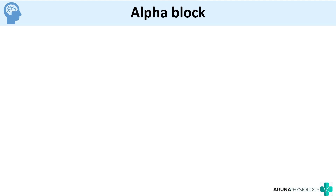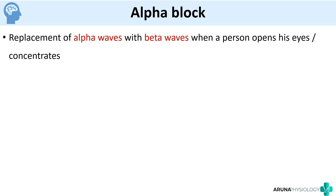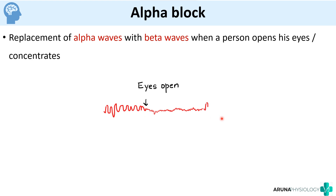Another important concept is alpha block. The replacement of alpha waves with beta waves when a person opens his eyes or concentrates is called alpha block. Suppose a person was in a relaxed state with eyes closed — we get alpha waves. But then suddenly if he opens his eyes, those alpha waves will be replaced by beta waves. And then again when he closes his eyes, the alpha waves will return. So this replacement of alpha waves with beta waves when a person opens his eyes or concentrates is called alpha block.